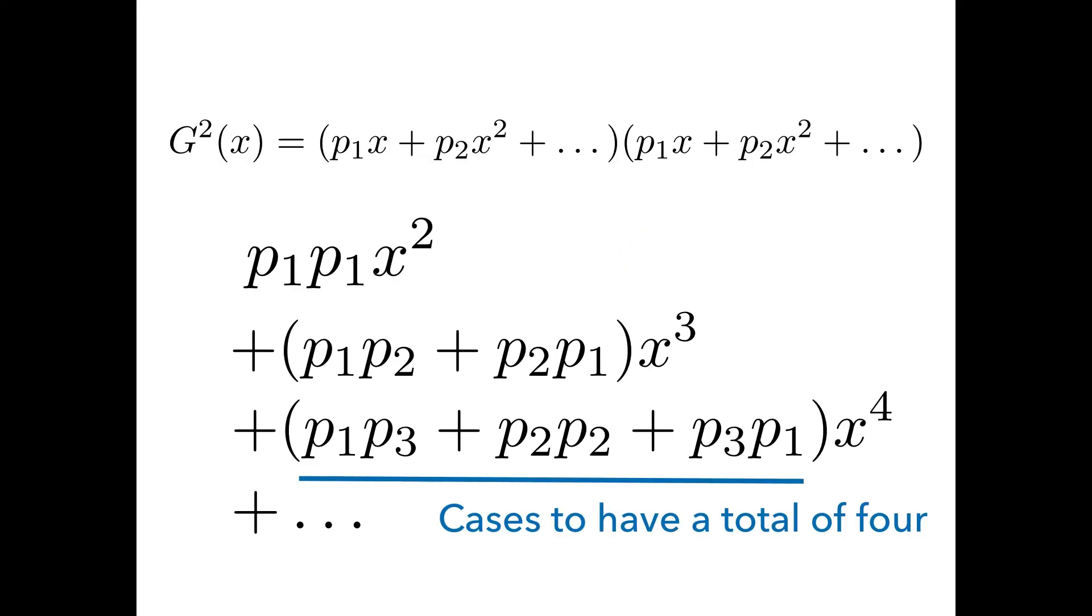Now let's look at another case. To have 4 as a total, you should either have 1 and 3, or 2 and 2, or 3 and 1. Such probability is p1 times p3 plus p2 times p2 plus p3 times p1, which is again exactly same as the coefficient of the x to the power of 4. So you can also notice that the power of x is always equal to the sum of the subscripts in the probability values, right?